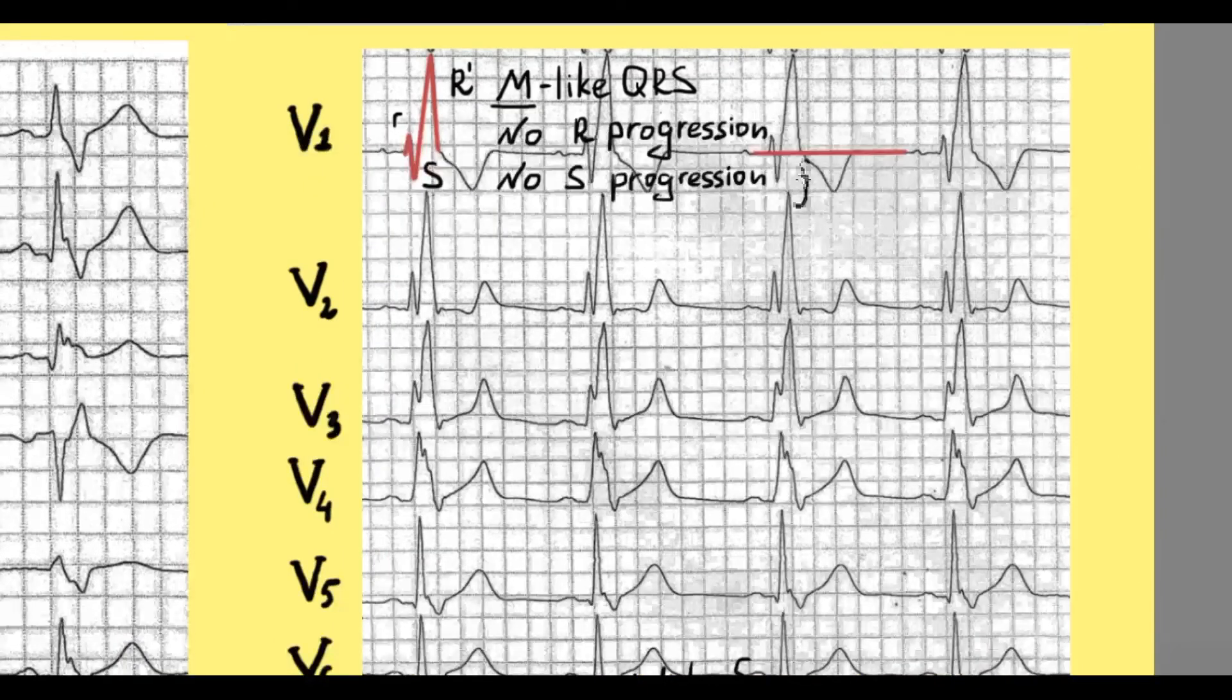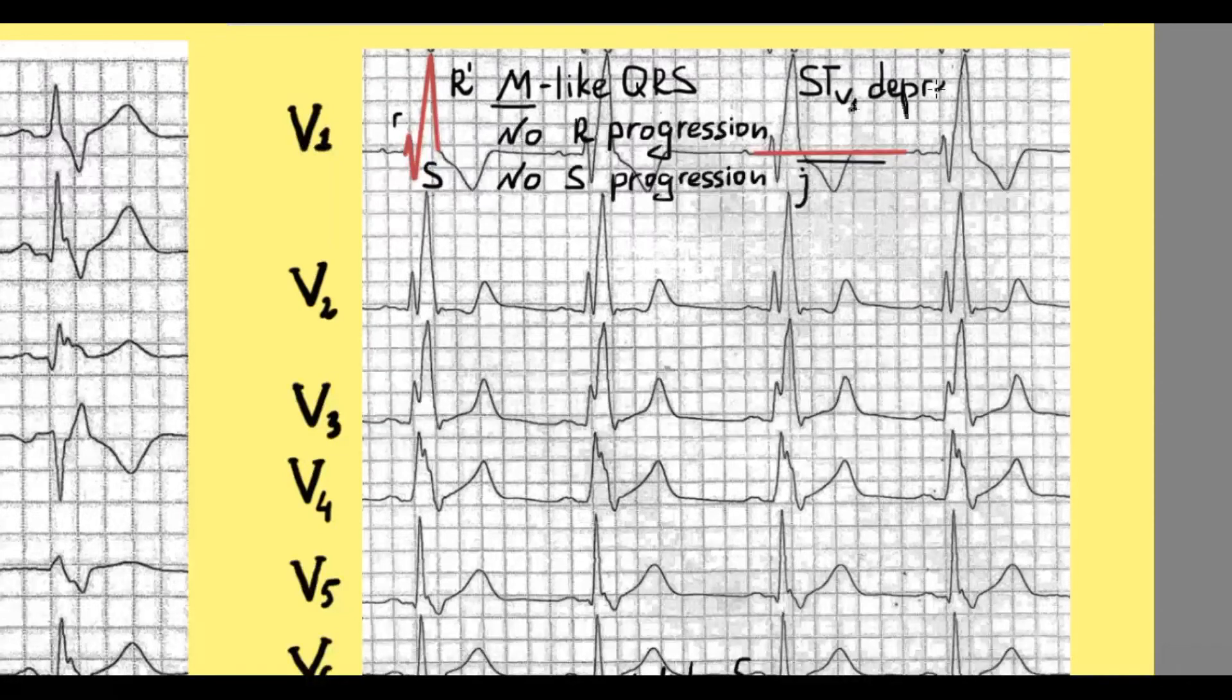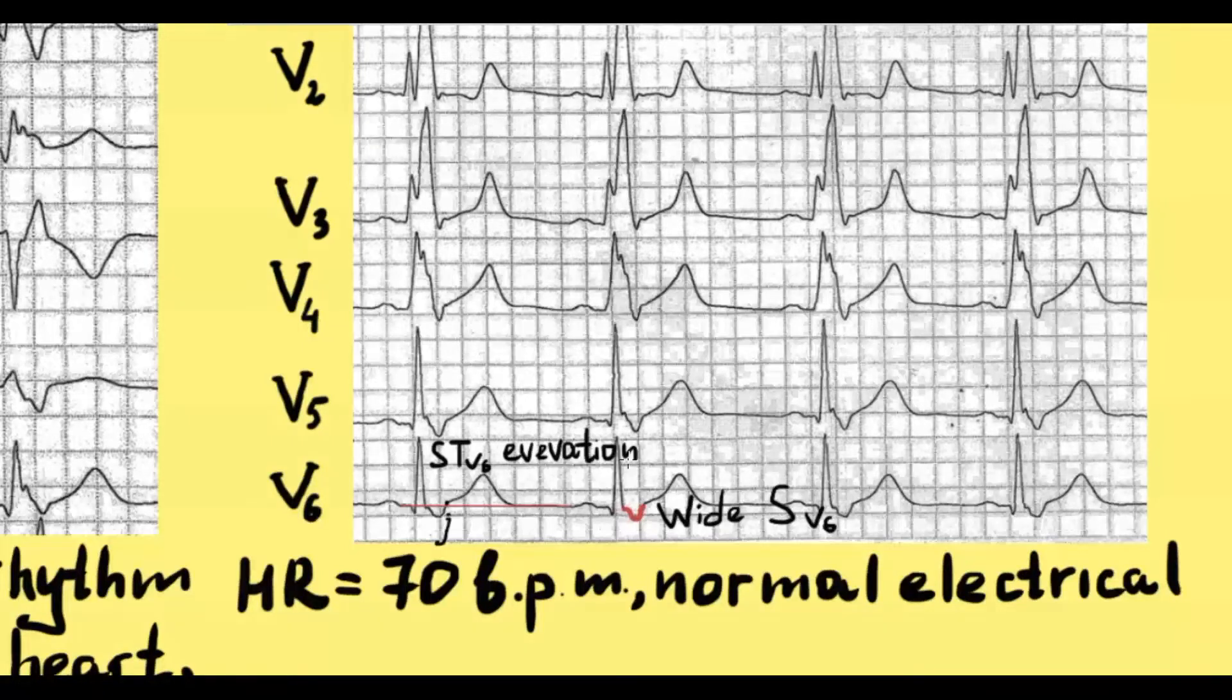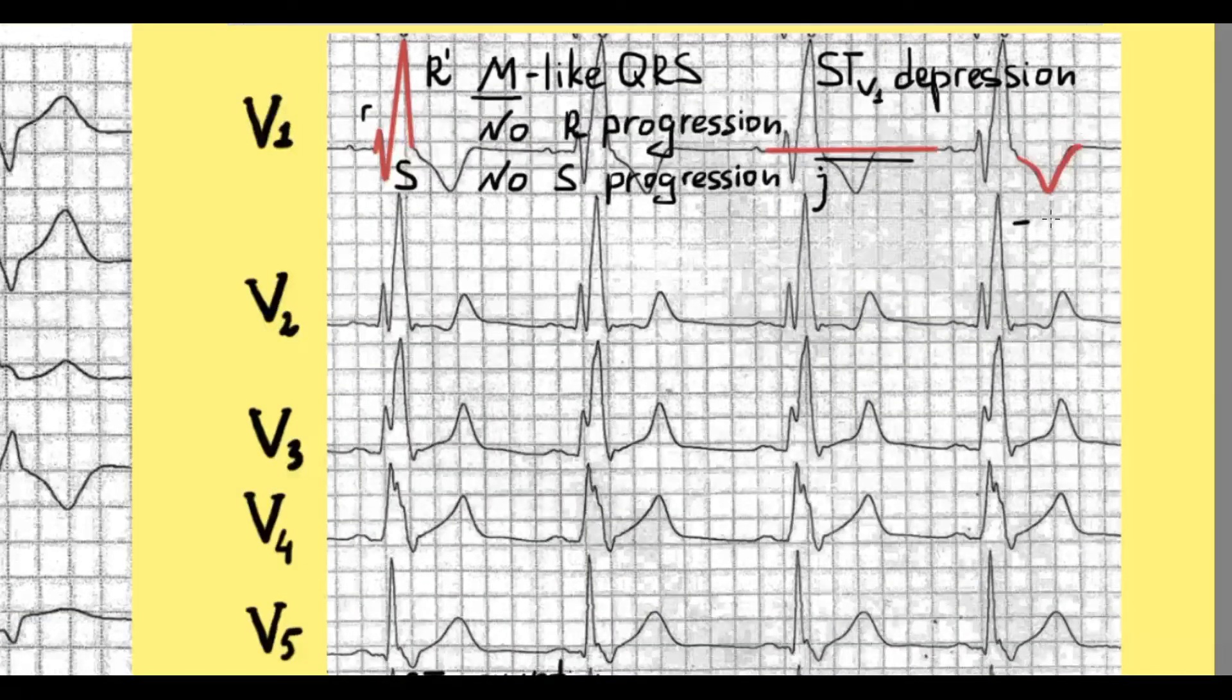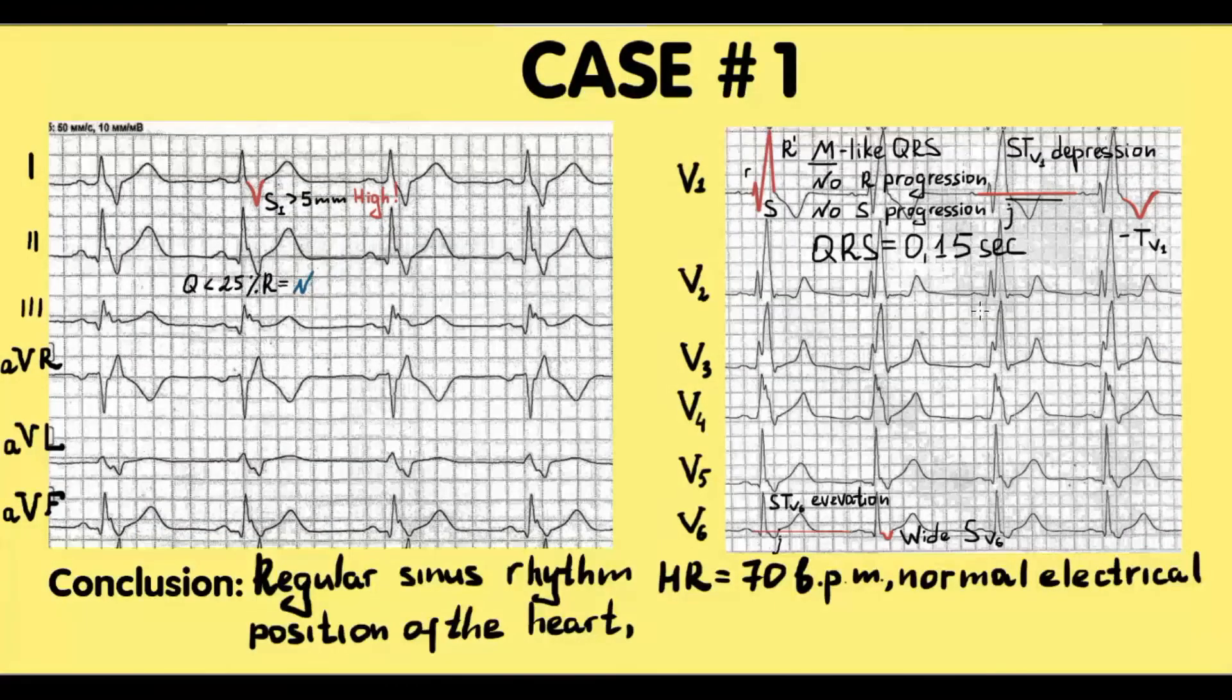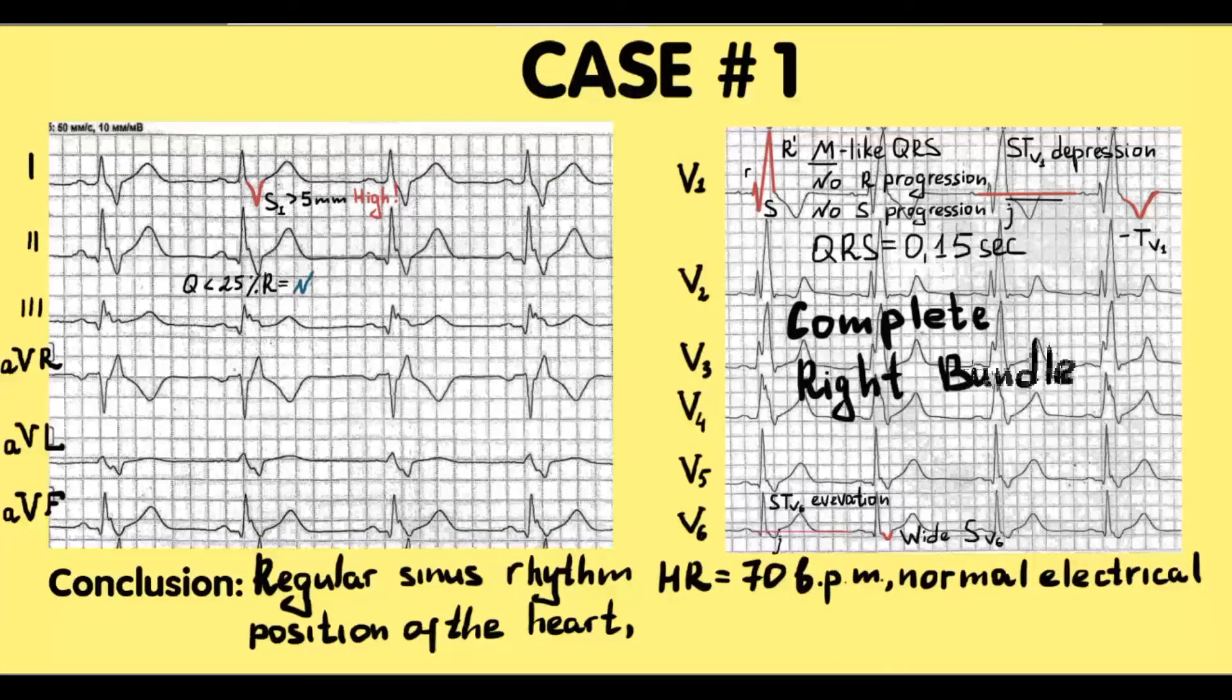Also we have ST segment depression in V1 and elevation in V6. The T wave is negative in V1. According to these changes QRS duration and morphology are abnormal. These changes are common for complete right bundle branch block.